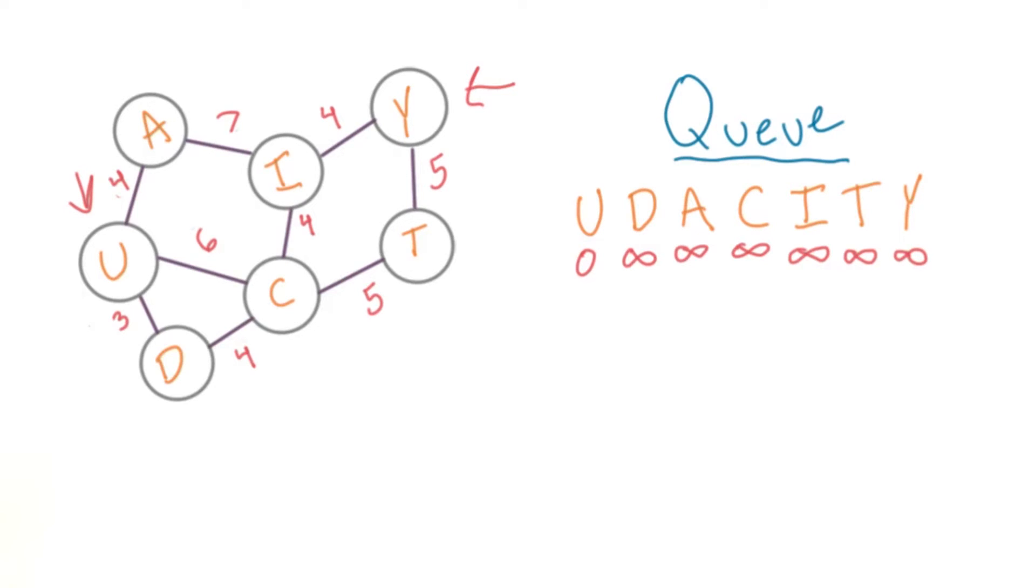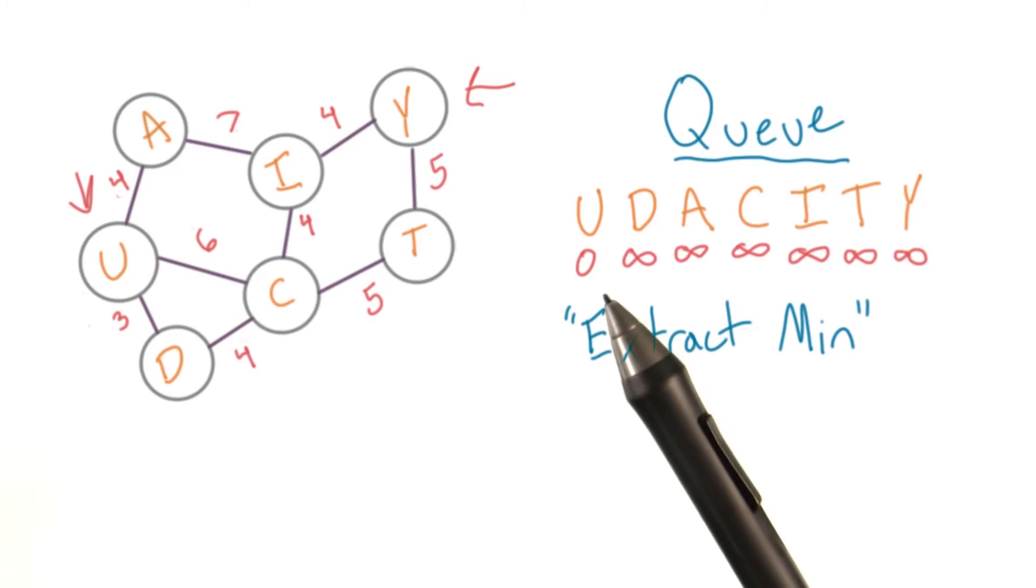A common implementation of Dijkstra's uses a min priority queue, where the element with a minimum priority, or minimum distance in our case, can be removed efficiently. We store all of our nodes in the priority queue and use extract min to take out the minimum element, the only one with a distance of 0.